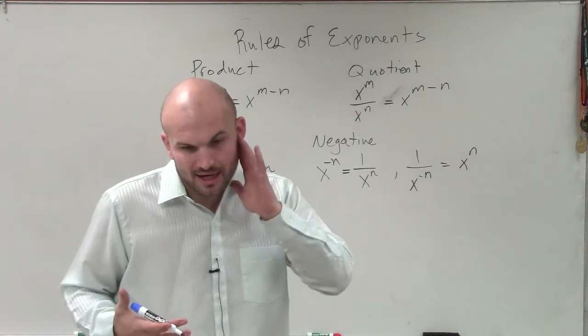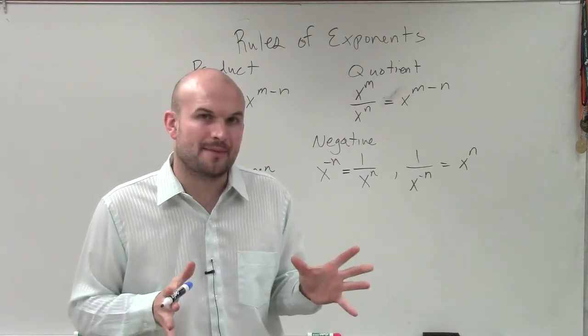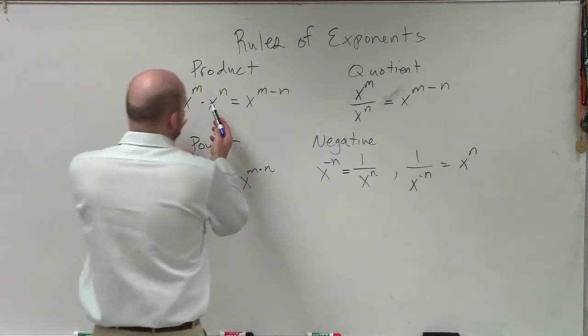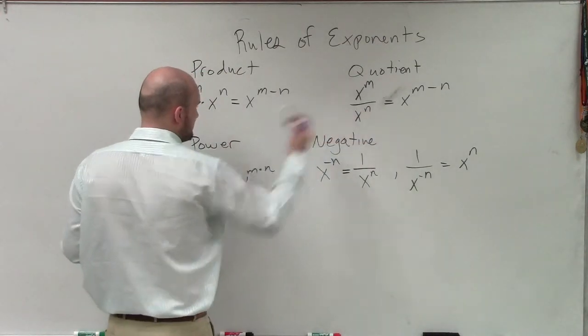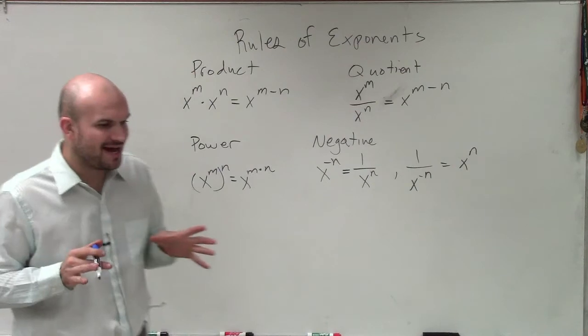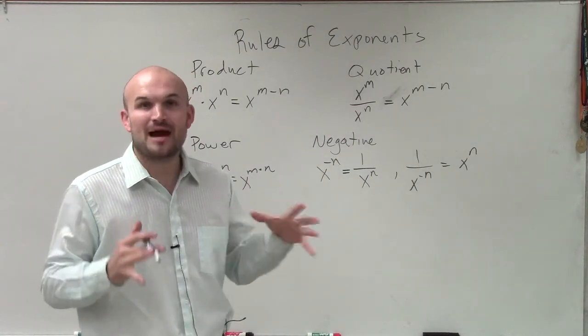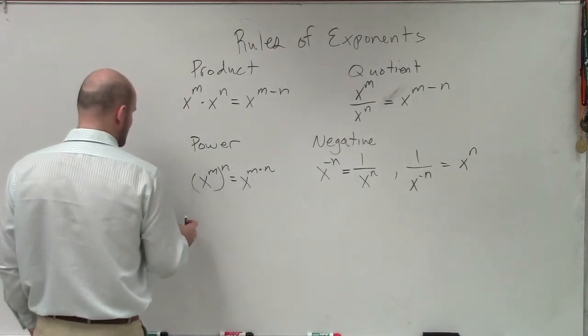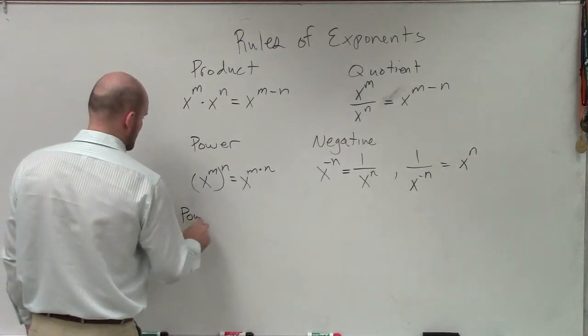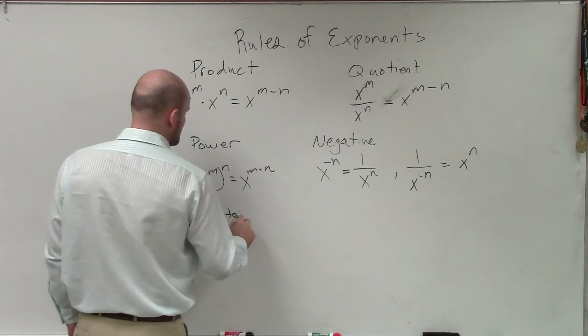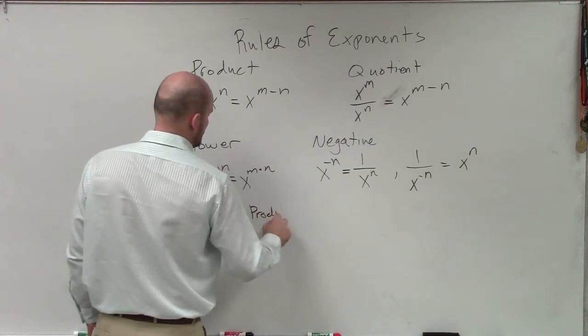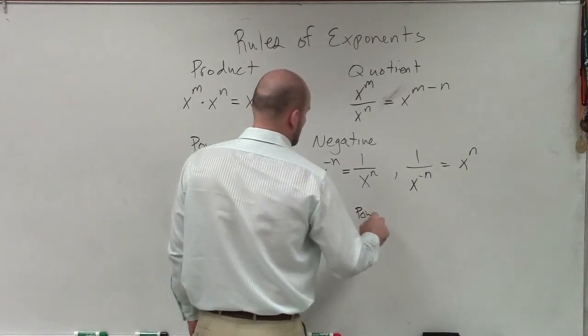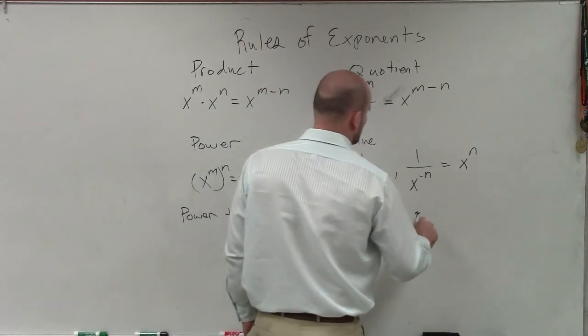Now, a lot of times the next two properties get often confused. But notice these worked only with multiplication and division. So when we have our addition and subtraction, these properties are not going to apply. But what we're going to do is the power to product rule and the power to quotient rule.